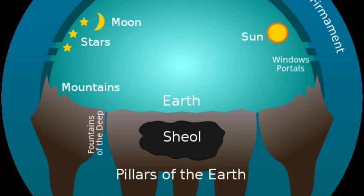Nowadays we talk about the Mediterranean and Atlantic oceans scattered here and there, but originally in the beginning, the earth was like a huge continent — one landmass surrounded by water. We'll talk about the whole idea of continental drift a little later on.